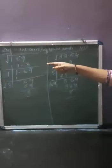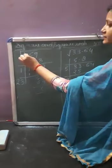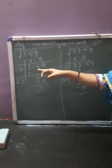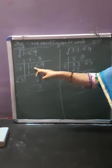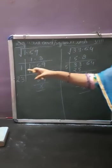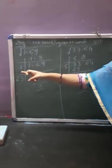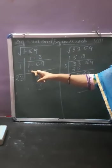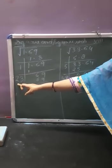Here I have taken one number — you have to find the square root of 1.69. The process is the same. You will write 1.69 and first you will solve for 1. Now 1 multiplied by 1, you will write 1 over here. 1 plus 1 is coming 2.